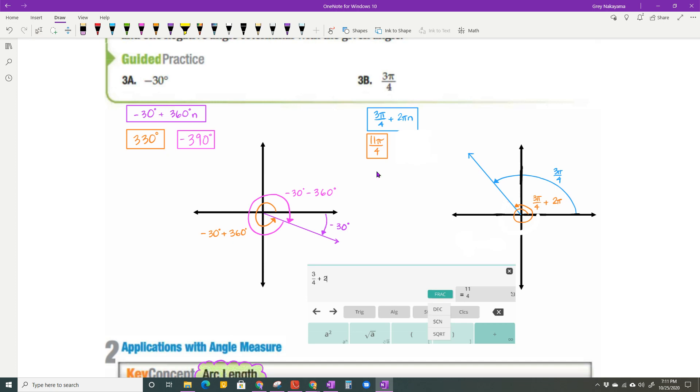And then the last one, we need a negative, so I'm going to start at the positive x-axis and go in a clockwise direction. And when I do, I'm going to have 3 pi over 4 minus 2 pi, and that gives me negative 5 pi over 4. And that is all that there is to degrees and radians.